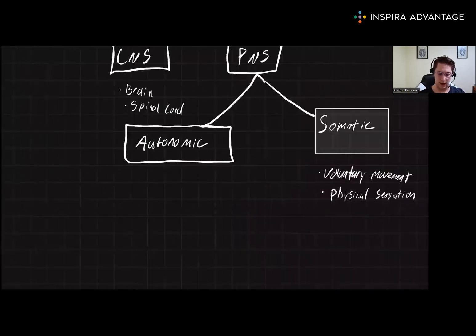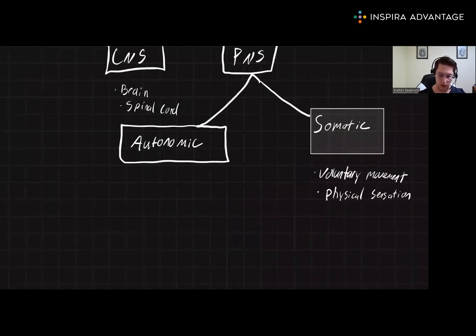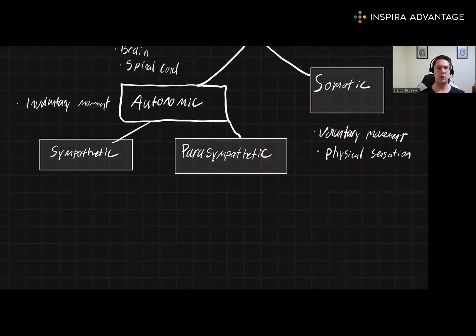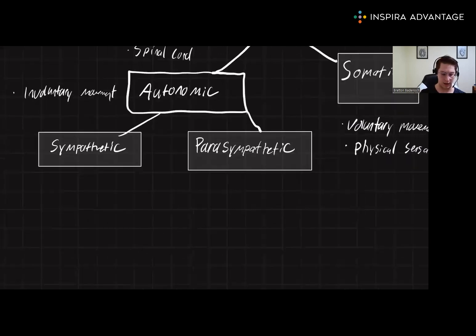So now let's take a look at the autonomic nervous system. Autonomic nervous system we have to break down into two parts. We've got the sympathetic nervous system and parasympathetic nervous system. Both of these systems are going to control involuntary movement and other processes. The sympathetic nervous system itself controls what is often referred to as the fight or flight response, while the parasympathetic nervous system controls rest and digest.